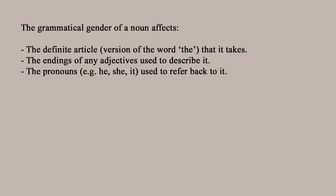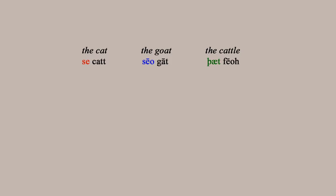The grammatical gender of a noun has an effect on the definite article it takes — which version of the word 'the' you stick in front of it. In Modern English you'd just say 'the cat', 'the goat', 'the cattle'. In Old English you'd say 'se cat', 'seo gat', 'þæt feoh'. Annoyingly, just like in German, there's usually nothing about the word that tells you what gender it is, so you just have to know.